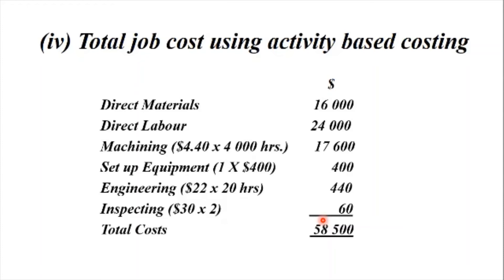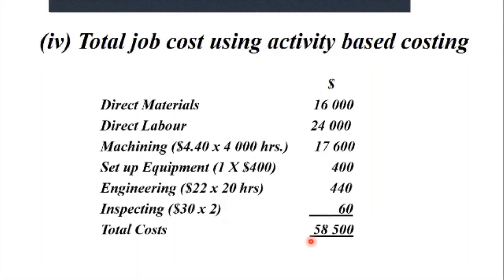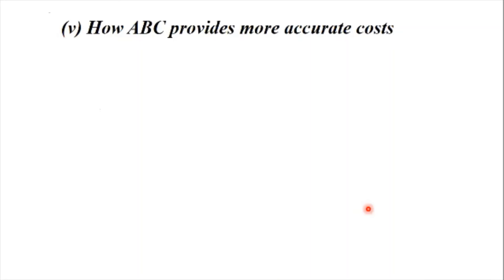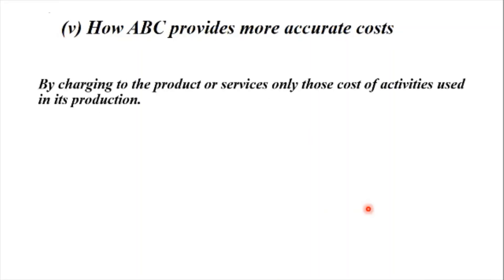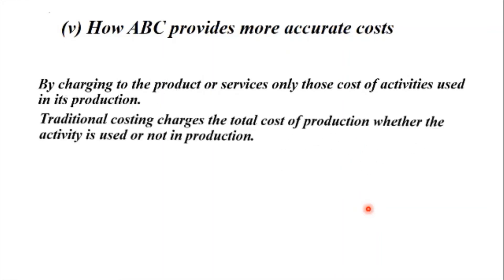This can be compared with the job costing total we got earlier. We notice how activity-based costing more efficiently and proportionally assigns costs to jobs. How ABC provides more accurate costs: by charging to the product or service only those costs of activities used in its production, whereas traditional costing charges the total cost of production whether the activity is used or not. That brings us to the end of Part A.